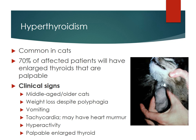Now let's talk about hyperthyroidism, which is common in cats — again, rarely seen in dogs. 70% of affected patients will have an enlarged thyroid, very easily palpable. Clinical signs: they're going to be middle-aged to older, polyphagic to the max — ravenously eating but losing so much weight. They may be vomiting, and there'll be tachycardia — heart rates of 200-something. You may also hear a murmur. They're also hyperactive; many owners report their cats running around crazily in the middle of the night.